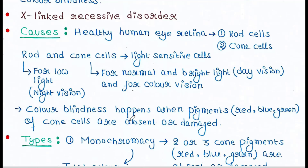Colorblindness happens when pigments — red, blue, and green — in the cone cells are absent or damaged. Rod cells do not have any direct relationship with colorblindness, but cone cells do.